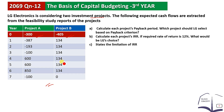In this table, Project A has uneven cash flow and Project B has even cash flow. Even cash flow means the same amount of cash inflow each year. Project B has the same amount of cash inflow every year.